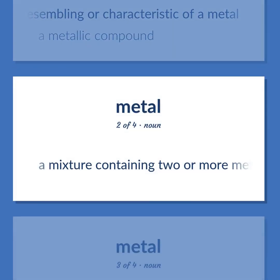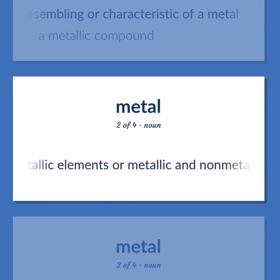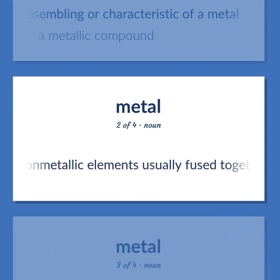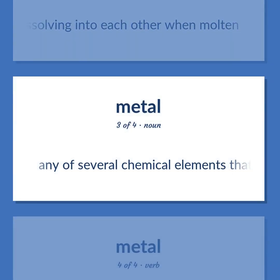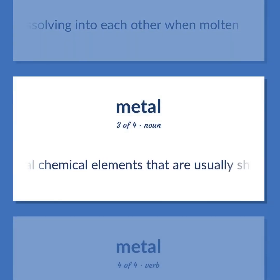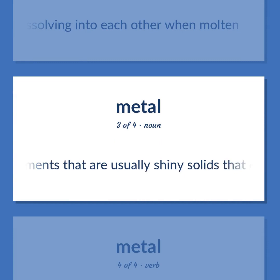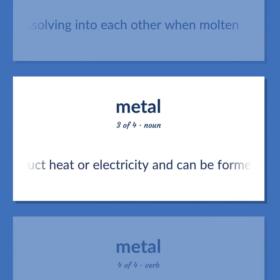Alloy: a mixture containing two or more metallic elements, or metallic and non-metallic elements, usually fused together or dissolving into each other when molten. Metal: any of several chemical elements that are usually shiny solids that conduct heat or electricity and can be formed into sheets, etc.